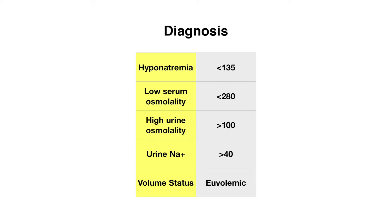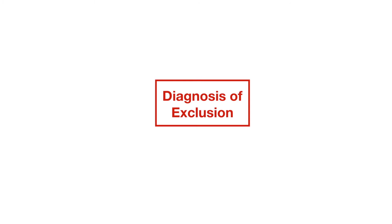If a patient comes in hypovolemic from vomiting, diarrhea, or other causes, ADH will be elevated in that case. However, that would be an appropriate increase in ADH in order to respond to decreased volume status. So for it to really be a case of SIADH, the patient's volume status should not be one that would lead to a physiologic increase in ADH — here, the ADH elevation is inappropriate. SIADH is a diagnosis of exclusion, so you need to rule out all other causes before you consider SIADH.